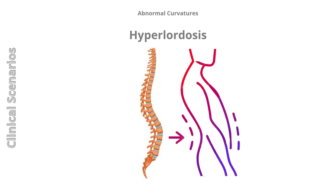Hyperlordosis: an abnormal increase in lumbar curvature, often associated with weakened trunk muscles, obesity, or pregnancy. A lordosis angle greater than 40 degrees is indicative of hyperlordosis.